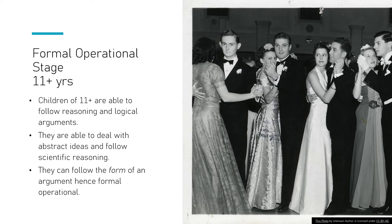The final stage is the formal operational stage, for children of eleven or above. They are able to follow logical reasoning and have an understanding of abstract concepts like morality, and can do algebra. They can think in a scientific way about cause and effect, follow arguments, understand why someone might say something from their opinion, and can understand and engage with someone else's opinion. This is where Piaget said a child's development is fully formed — although sometimes adults much older than eleven may still struggle with some of these tasks.